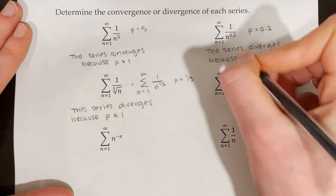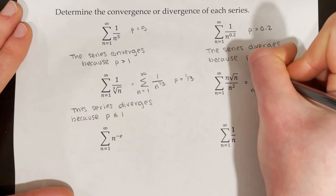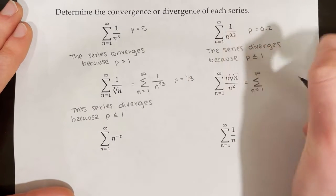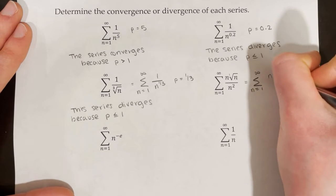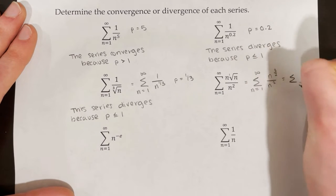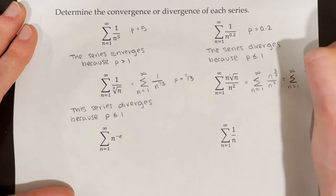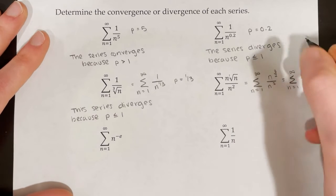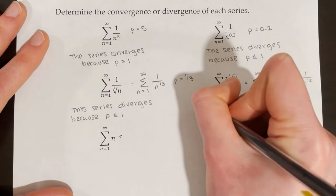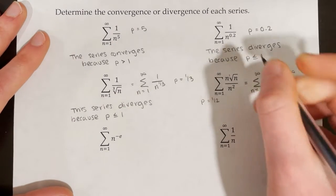In this next one, we have the series from n equals 1 to infinity of n times the square root of n, all over n squared. That's n to the power of 1 times n to the power of 1 half, or n to the power of 3 halves, over n to the power of 2. Rewriting, we get 1 over n to the power of 1 half — taking 2 minus 3 halves equals 1 half. So p is equal to 1 half, and since 1 half is less than or equal to 1, this series diverges.